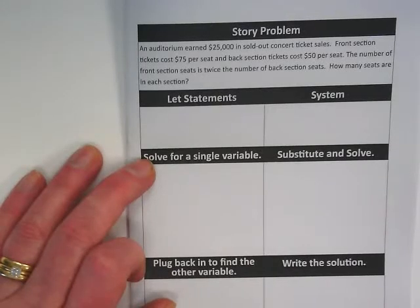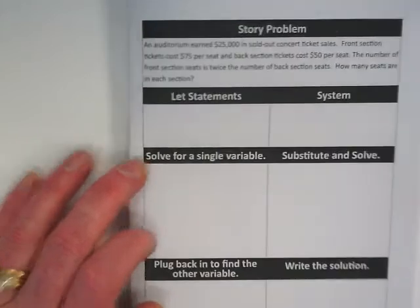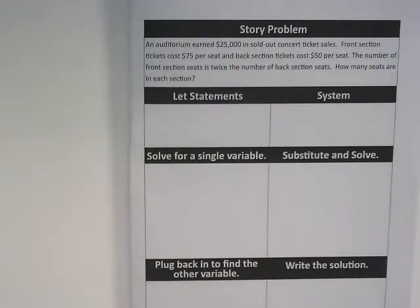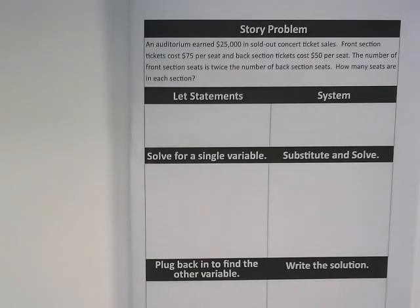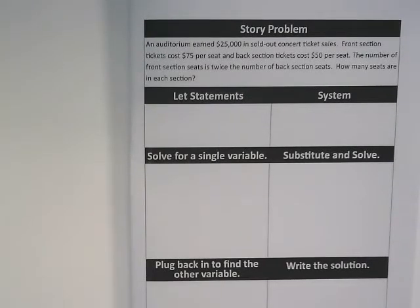An auditorium earned $25,000 in sold-out concert ticket sales. Front section tickets cost $75 per seat. Back section tickets cost $50 per seat. The number of front section seats is twice the number of back section seats. How many seats are in each section?